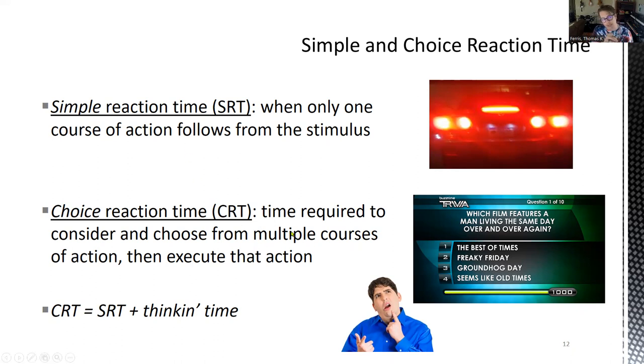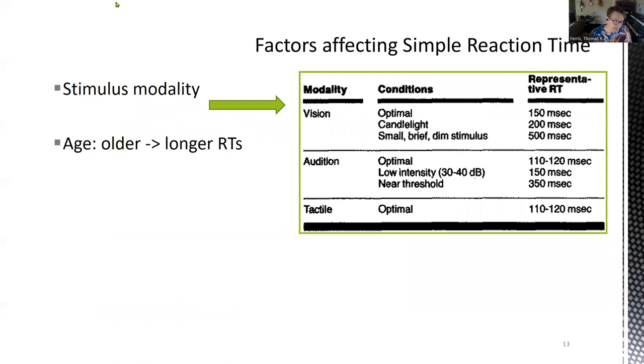Choice reaction time involves thinking time. So I told you that will come up again. Simple reaction time might be, hey, as soon as this light comes on, press this button, and I can just be sitting there ready: light on, button, light on, button. And that's going to be my simple response time response, because I pressed the button. But now if I add to that, if this light comes on, press this button, if this other light comes on, press this other button, if this other light comes on, press this third button, and so the more choices I have, the more potential outcomes and potential related courses of action, that takes up more processing time.